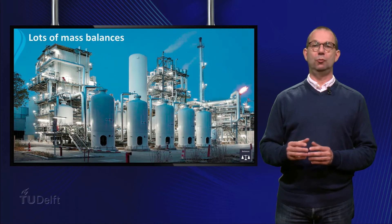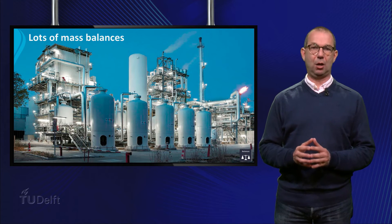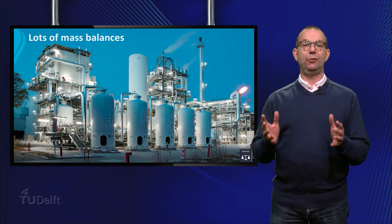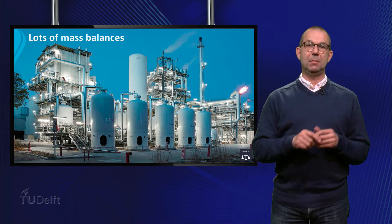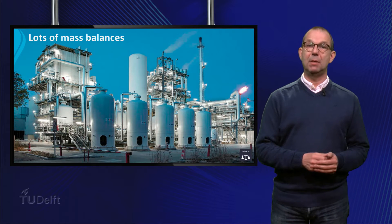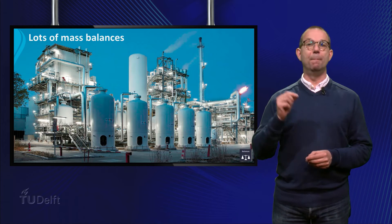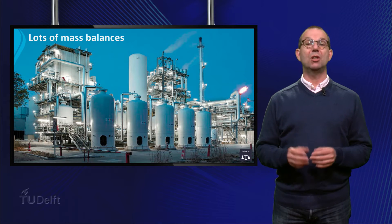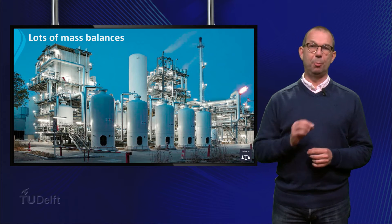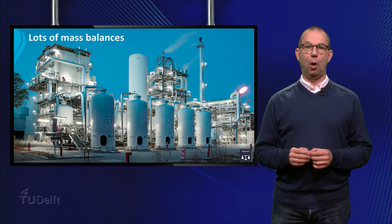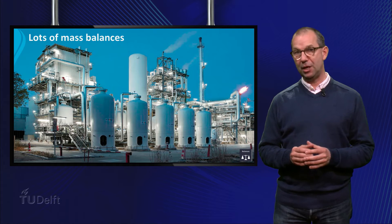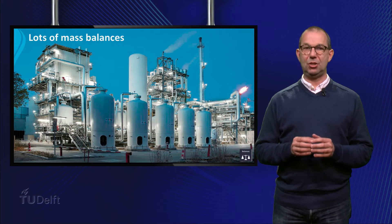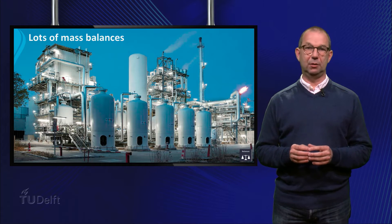In many plants, raw materials are converted into products. To save material, energy and money, this is done in the most efficient way. Nowadays, sustainable operation is required for the sake of future generations. Balances play a crucial role here.